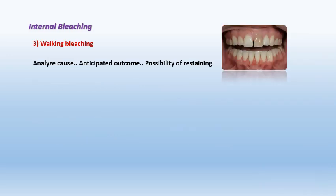In walking bleaching, the bleaching agent is applied inside the pulp chamber and the patient is sent home with the bleaching material inside the access cavity. That is why it is called walking bleaching — the patient walks away with the bleaching material in place, and the outcome is assessed at follow-up sessions.